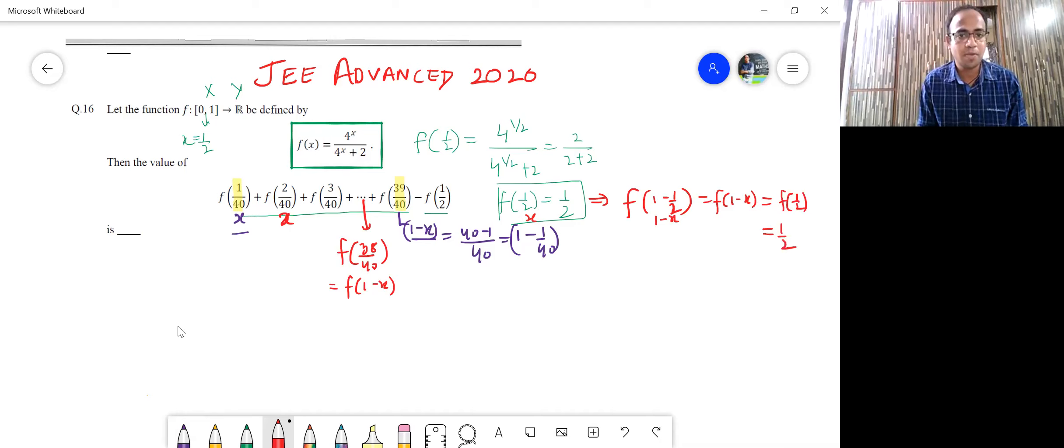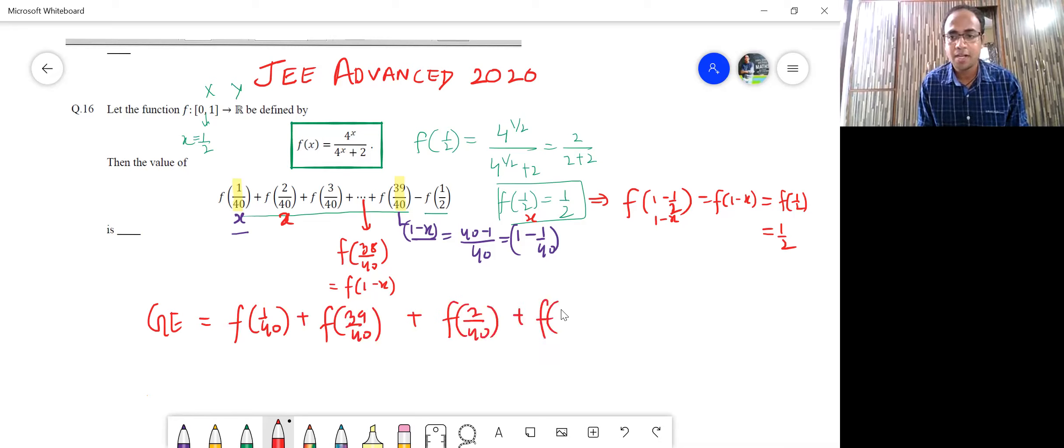That means our given expression would be boiling down to f(1/40) plus all such combinations, f(39/40). Similarly, I can take f(2/40) combined with, yes, you got it right, 38/40 and so on and so forth until we encounter one thing, which is nothing but f(20/40) and the f(1/2) will be here.